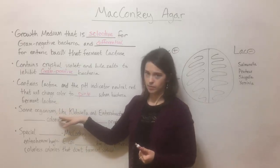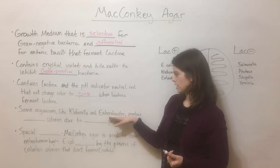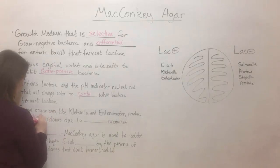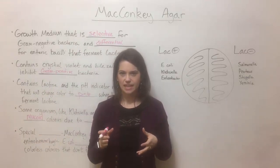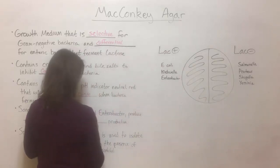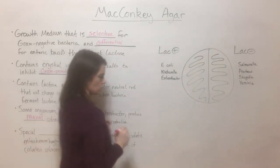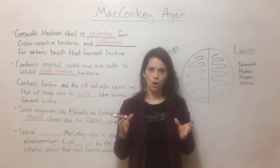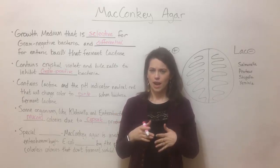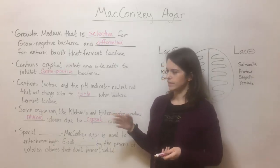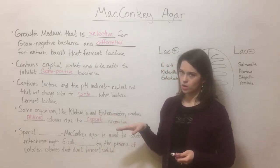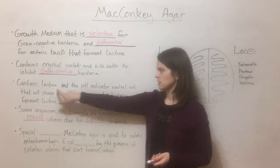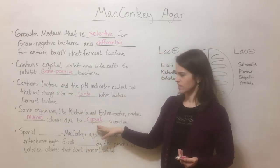Something else to keep in mind is that some organisms, including species that are part of the Klebsiella genus or the Enterobacter genus, produce colonies that are known as mucoid colonies. Mucoid means they're kind of wet and sticky looking, and that is due to the production of a capsule. A capsule is a sticky carbohydrate-based coat that can be outside the cell wall of a bacterium. It often helps it hide from the immune system, making it more virulent — so a capsule is considered a virulence factor. Klebsiella and Enterobacter produce mucoid colonies because they're using the lactose in the media to produce their capsules.